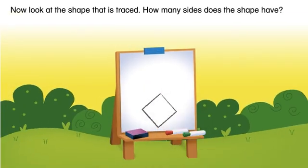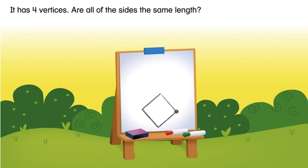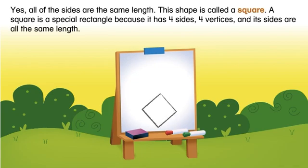Now look at the shape that is traced. How many sides does the shape have? It has four sides. How many vertices does the shape have? It has four vertices. Are all of the sides the same length? Yes, all of the sides are the same length. This shape is called a square.